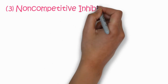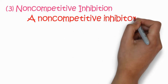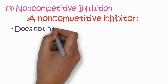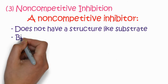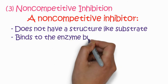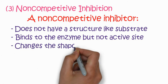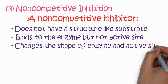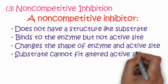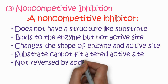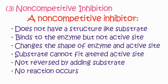The third class is non-competitive inhibition. A non-competitive inhibitor does not have a structure like that of the substrate, so it is not competitive in nature. It binds to the enzyme but not to the active site — it is attached to another site and changes the shape of the enzyme, which also results in changes to the active site so the substrate cannot fit.